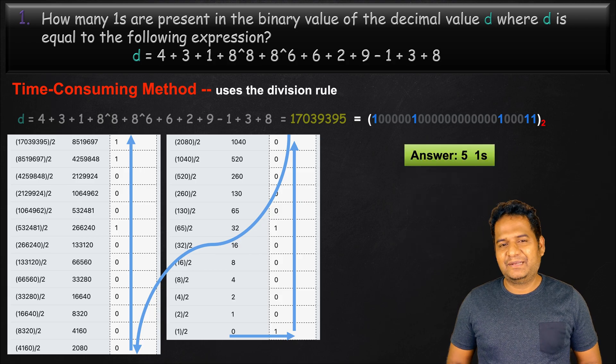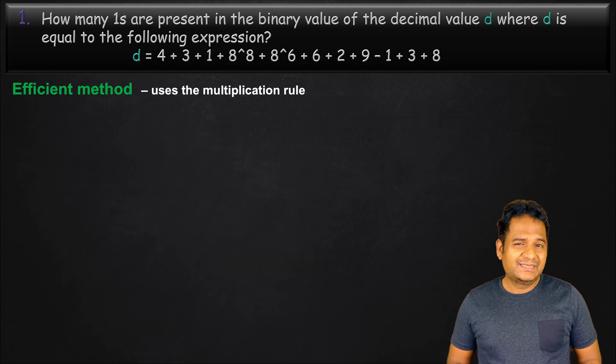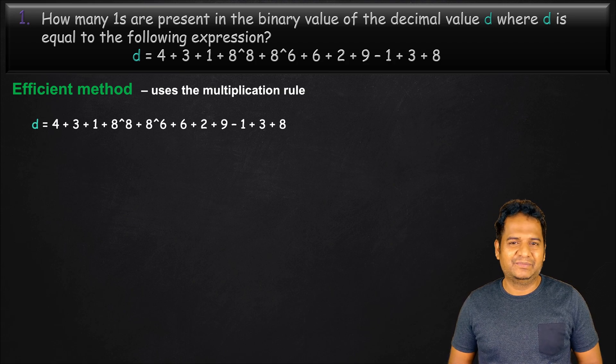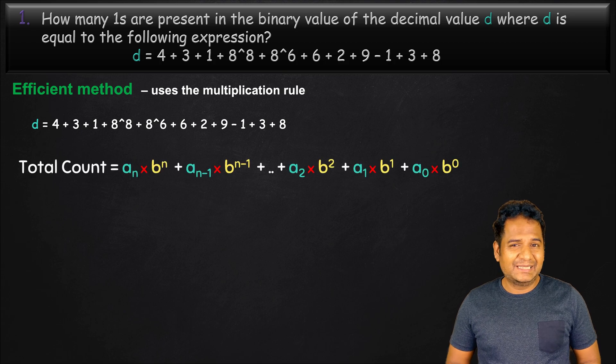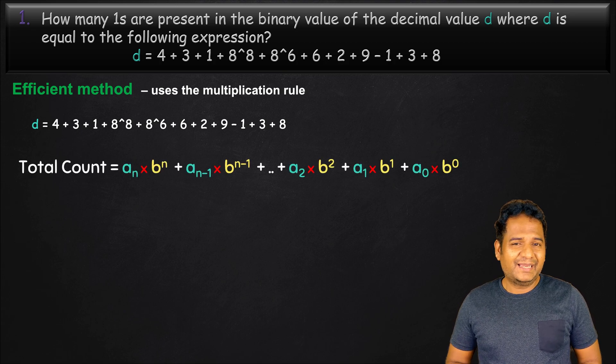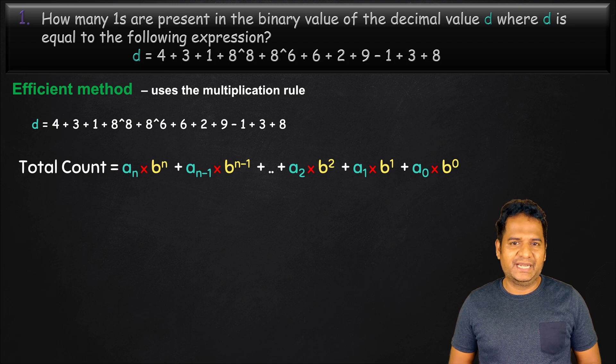Let's look at the second method. The question itself has a hint by expressing the decimal value as an expression. Our total count formula discussed in the previous video is also kind of an expression. This is a big hint to solve this problem efficiently.